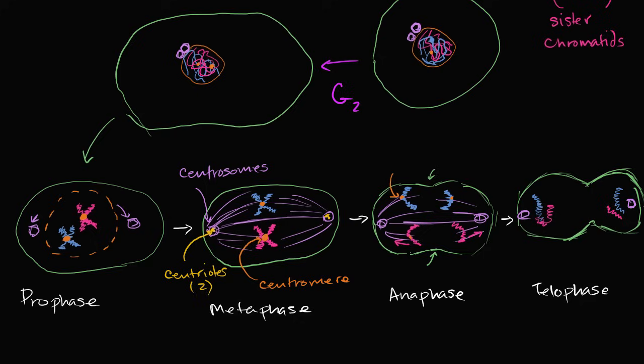And you start to have nuclear membranes forming around the DNA. So once again, it's kind of redoing what was undone in prophase. Undone in prophase. And so when you're done, you essentially, you're going to have these nuclear membranes. The DNA is going to go back to its chromatin form. And then you have cytokinesis.